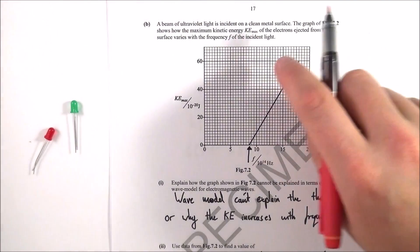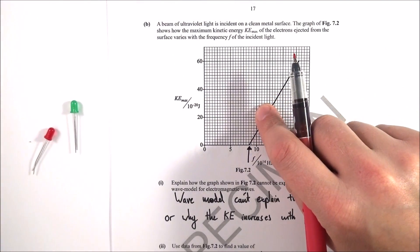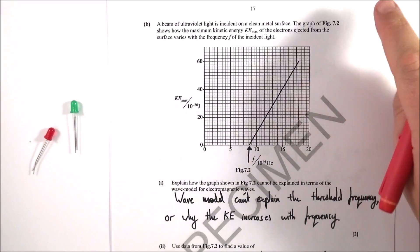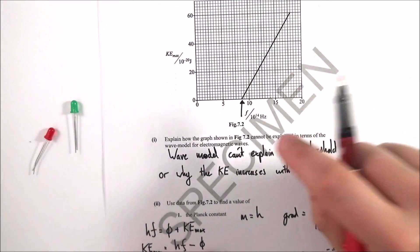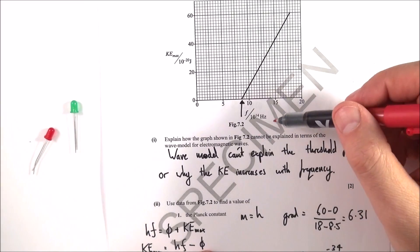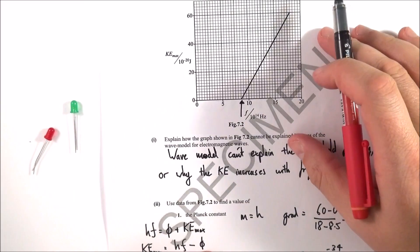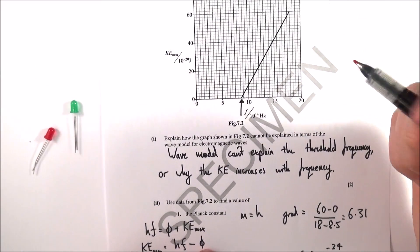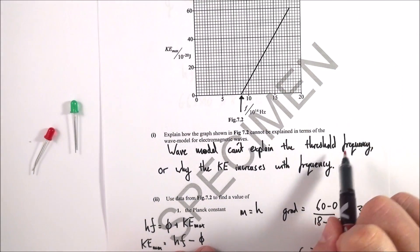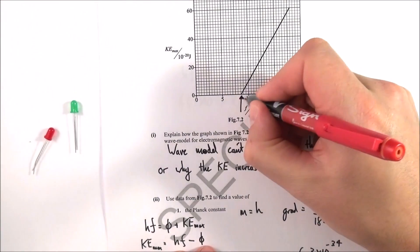The next bit, if you know your stuff on quantum physics, which I think is pretty interesting, this should be familiar. How does the graph show that the wave model for EM waves can't explain what's happening? What we're talking about now is the work function. The wave model can't explain the threshold frequency, which is this point here I've marked on the graph.